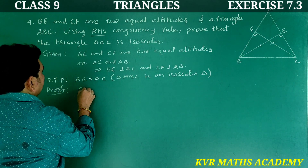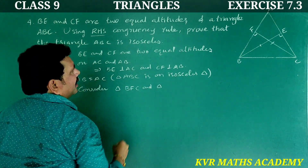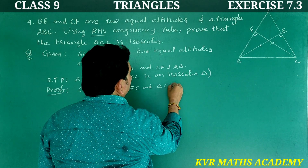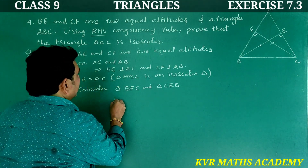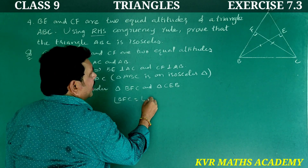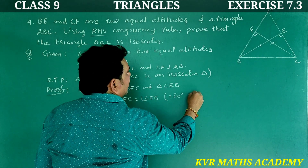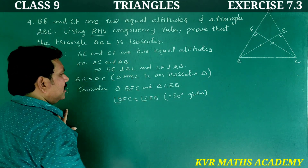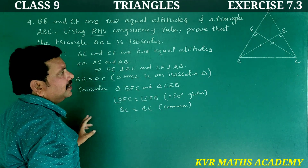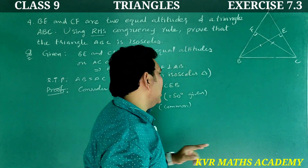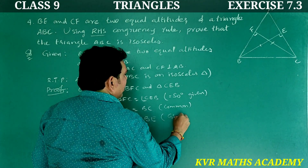Consider triangle BFC and triangle CEB. In both the triangles, angle BFC is equal to angle CEB, and that is equal to 90 degrees — given. Next, BC is equal to BC — common side for both triangles. And CF is equal to BE — given, as they are equal altitudes.